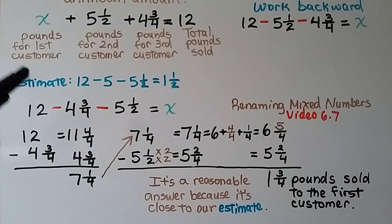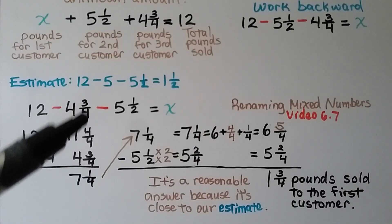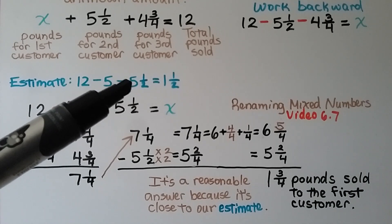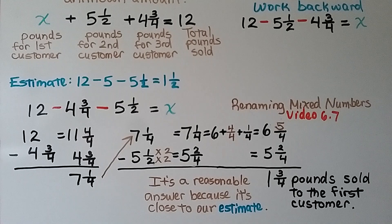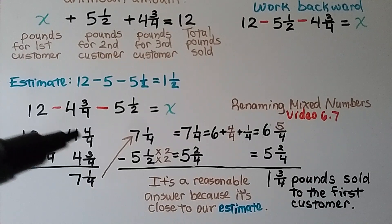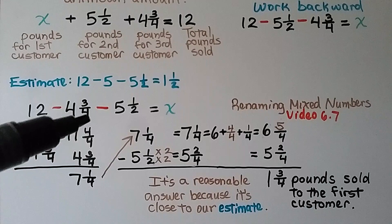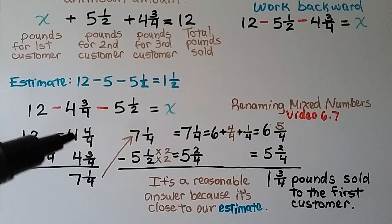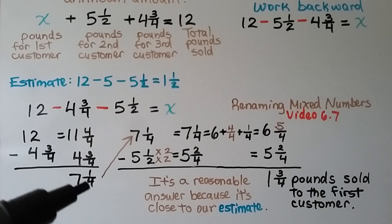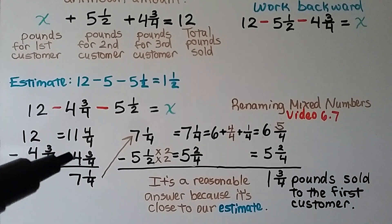To work backward, we start with 12 and subtract 5 and a half, then subtract 4 and 3 fourths, and whatever is left is the value of x. We can estimate using benchmarks: 12 minus 5 is about 7, then subtracting about 5 and a half leaves about 1 and a half, so our answer should be about 1 and a half. We do 12 minus 4 and 3 fourths. We rename 12 as 11 and 4 fourths. Now we subtract 3 fourths from 4 fourths to get 1 fourth, and 11 minus 4 is 7. We're at 7 and 1 fourth.